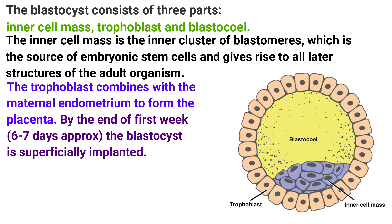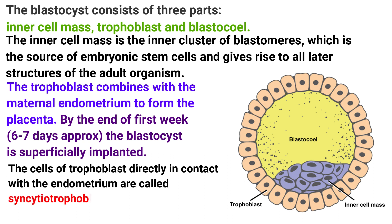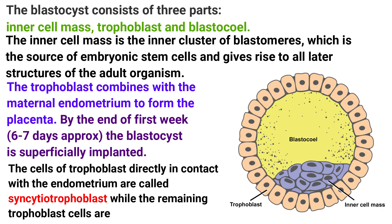By the end of the first week — approximately six to seven days — the blastocyst is superficially implanted. The cells of the trophoblast directly in contact with the endometrium are called syncytiotrophoblast, while the remaining trophoblast cells are called cytotrophoblast. So trophoblast cells directly attached to the uterine endometrium are syncytiotrophoblast, and those not attached are cytotrophoblast.